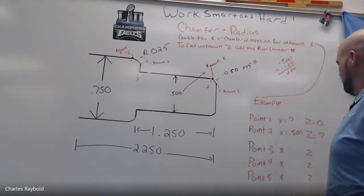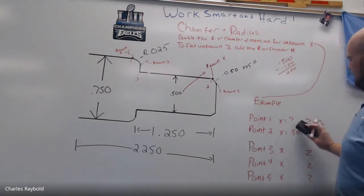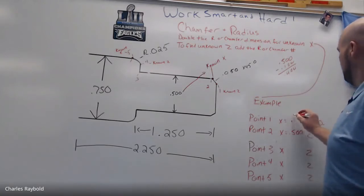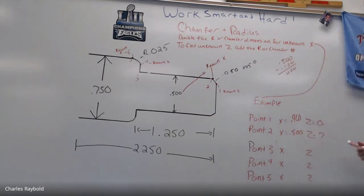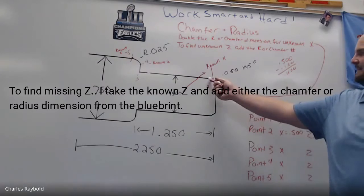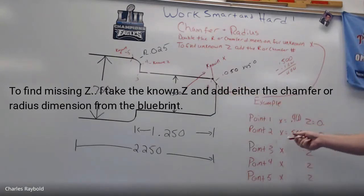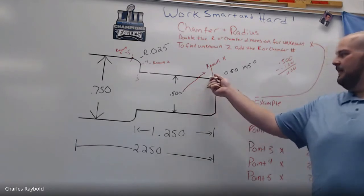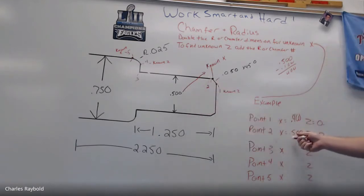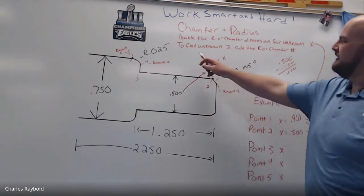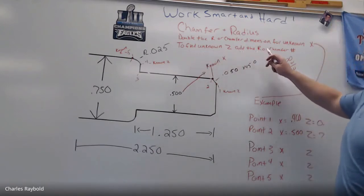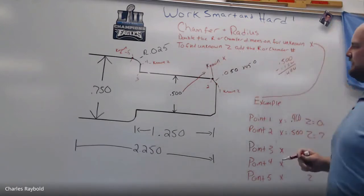That's going to be point four hundred. Now, to get to the end, I know what my X is — we already figured that out. I know it's point five. There's my diameter here — that's going to be point five hundred. Now I got to figure out how to get there in the Z. To find the unknown Z, add the R or the chamfered number to it.